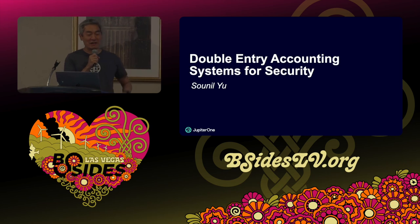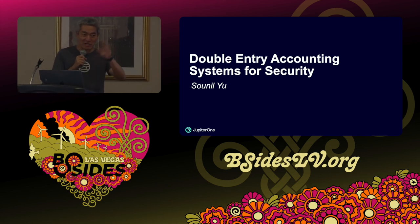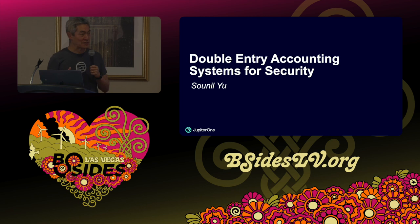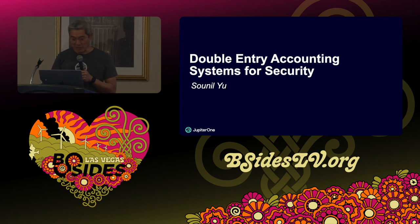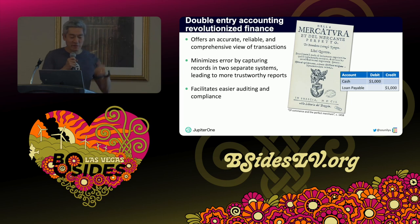Thanks for coming. I'm Sunil Yu, and I don't know if you had a chance to see the keynote, but I did make a quick reference to this in the keynote. It's all around how do we start applying certain practices that we know in accounting towards security. If you don't know what double entry accounting is, I want to give a quick definition — a summarized version of what you can find in Wikipedia.